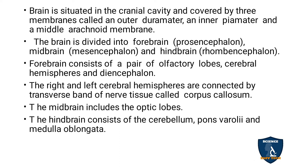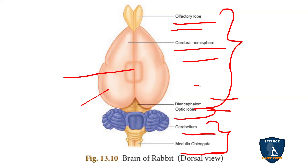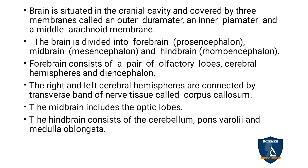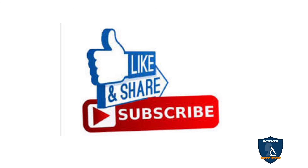The forebrain consists of a pair of olfactory lobes, cerebral hemispheres, and diencephalon. The right and left cerebral hemispheres are connected by the corpus callosum. The midbrain includes optic nerves, which are responsible for vision. The hindbrain consists of cerebellum, pons variolae, and medulla oblongata. This is the structure of the brain.